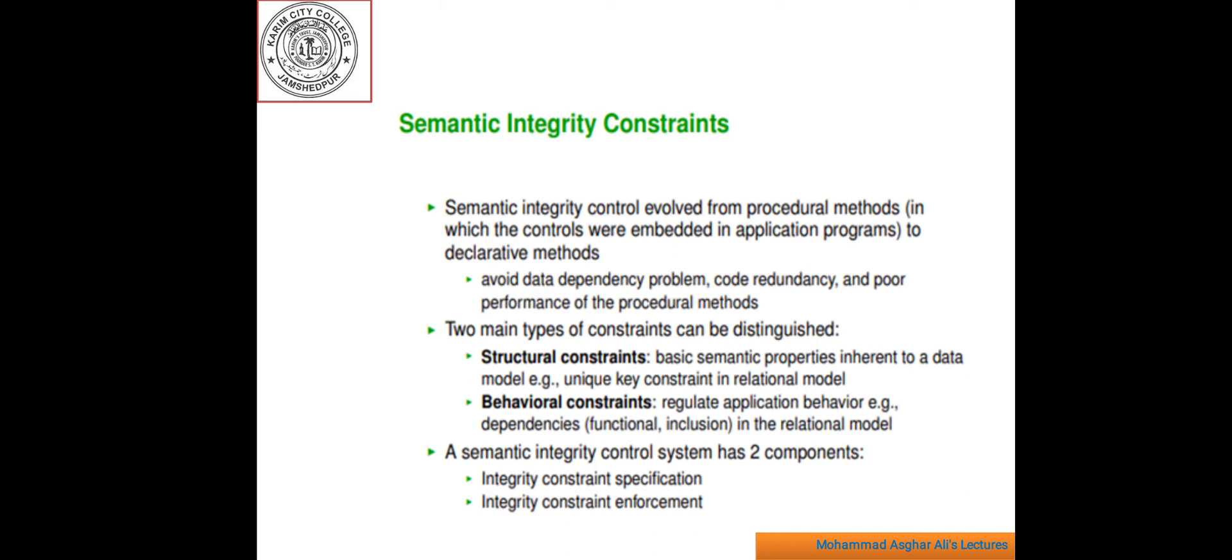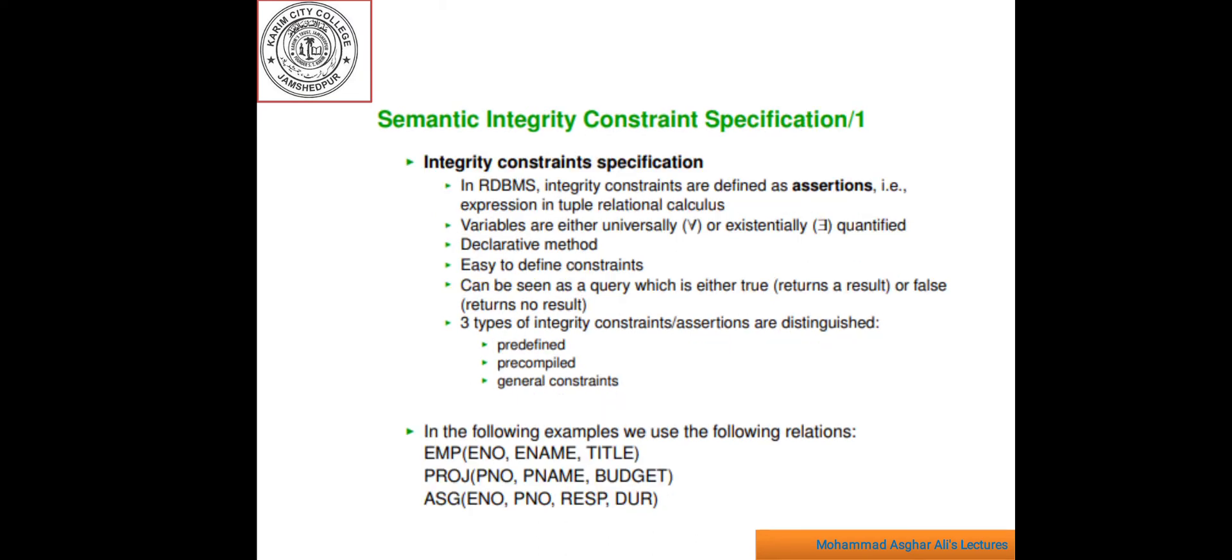A semantic integrity control system has two components: Integrity constraint specification and integrity constraint enforcement. Number one, integrity constraint specifications.